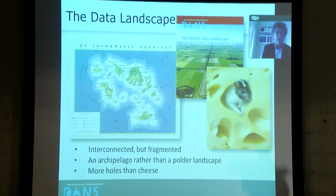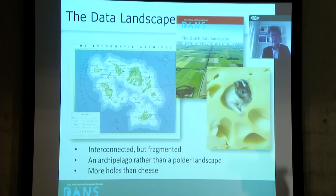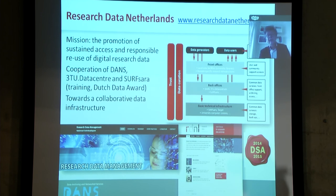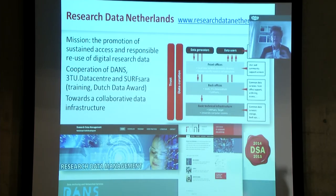Moving a bit wider than just my own institute, we should admit that if we look at this data landscape, it is quite fragmented — more like an archipelago than the organized polder landscape the Netherlands is known for. It is more like a Swiss or Dutch cheese with many holes in it. That is why we set up Research Data Netherlands as an initiative of a couple of organizations, together with the Academic Networking and Computer Facilities organization SURF and the data center of the technical universities, to try and collectively cover all of the research landscape and provide data services for them.